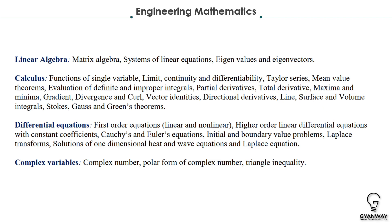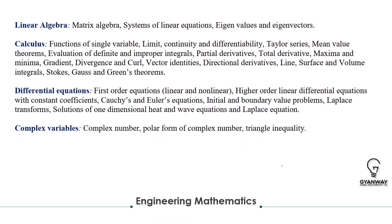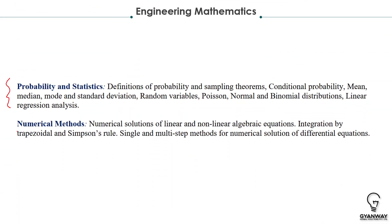Engineering Mathematics forms 12% of the GATE examination. Topics include Linear Algebra (matrix algebra, linear equations, eigenvalues, eigenvectors), Calculus (improper integrals, limits, continuity, differentiability, partial and total derivatives, Taylor series, maxima-minima, Gauss divergence, curl theorem, Stokes, Gauss, and Green's theorems), Differential Equations, Complex Variables (polar form, triangle inequality), Probability and Statistics, and Numerical Methods — from which a two-mark question is asked every year.